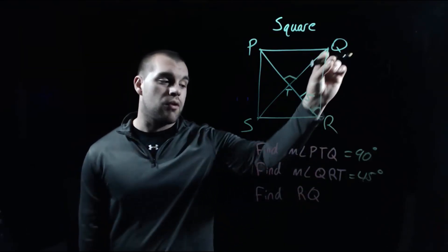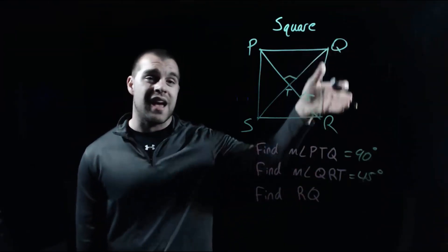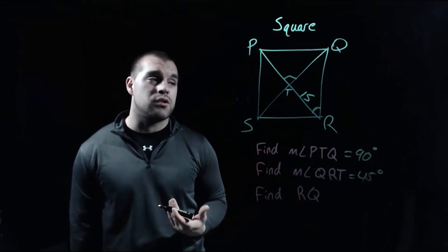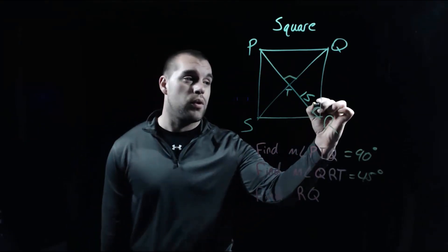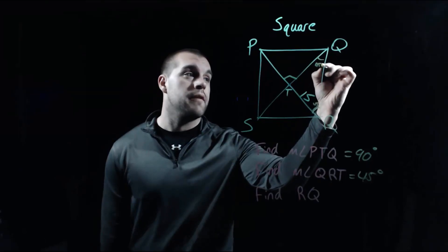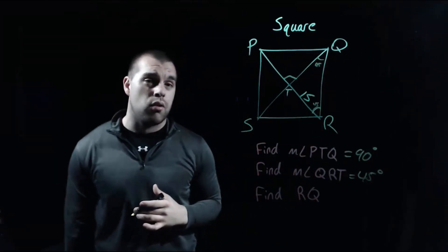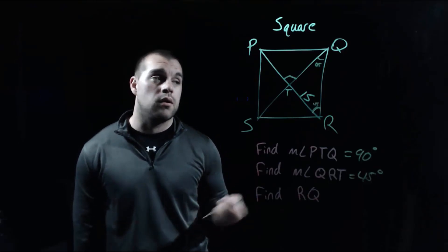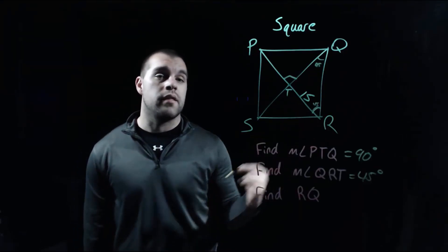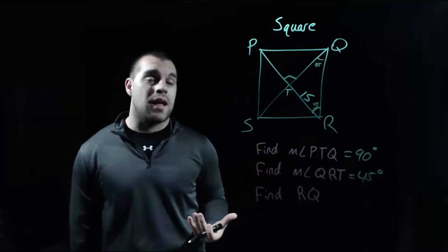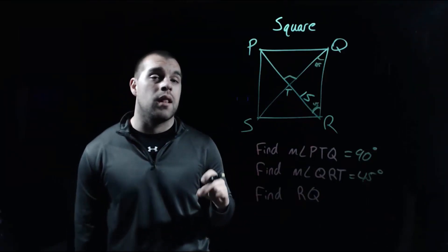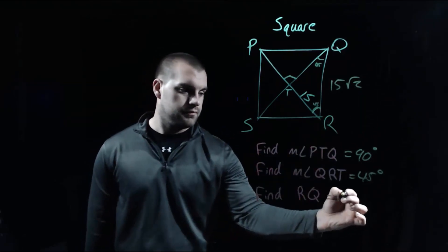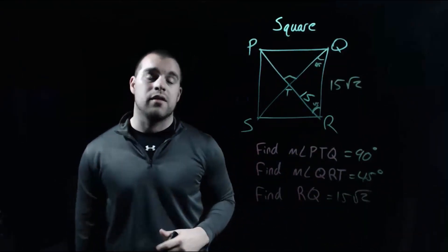The last thing we're going to find is the length from R to Q — that's the length on the outside of our figure. We're going to use a special right triangle here. Since this is a 45 degree angle, this up here also has to be a 45 degree angle, and we've got a 90 degree angle in the middle. So this is a 45-45-90 special right triangle. If this 15 is one of the legs, then to find the length of the hypotenuse, we take the length of the leg times root 2. So this length out here is 15√2. That's going to be it for this video, thanks for watching.